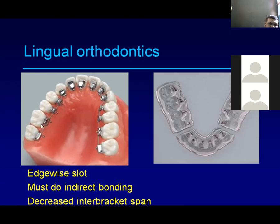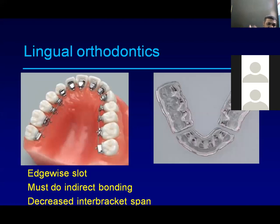Most people now use customized lingual brackets. Customized means you decide the prescription — the tip and torque for each individual tooth — write it down, and send everything including your study cast and prescription to the lab. The lab prepares particular brackets with a particular design for you. With indirect bonding, they send back a tray; you then etch, apply bonding, place adhesive, insert the tray in the patient's mouth, and cure it.